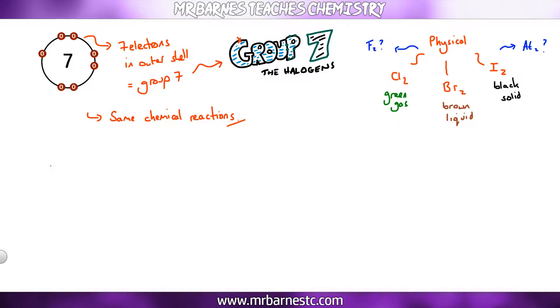Now there are a couple of things you need to be able to do with Group 7. The first one of those is talk about the reactions between a metal and a halide. A halide is anything from Group 7. So if I take a metal and chlorine I'm going to get a metal chloride. The ending changes from I-N-E to I-D-E.